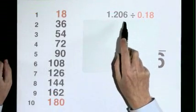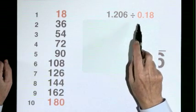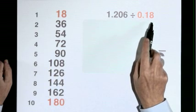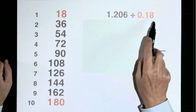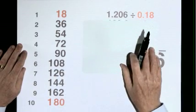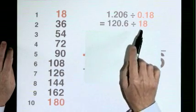1.206 divided by 0.18. It is best to divide by a whole number. So why not multiply the 0.18 by 100 to make it into 18? But then we have to multiply this number by 100 as well. So the best sum to do is 120.6 divided by 18.